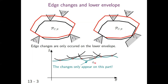Therefore, changes only occur on the lower envelope of the functions as shown in the graph. We only need to count the intersections on the lower envelope. The number of intersections on the lower envelope depends on two variables: the number of functions, and the maximum number of intersections for each pair of functions.